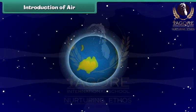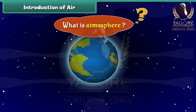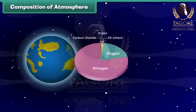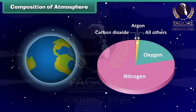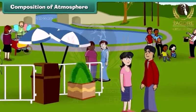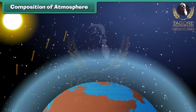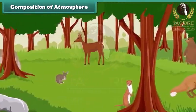Do you know the atmosphere surrounding earth is full of air? The atmosphere is made up of a mixture of gases, primarily nitrogen and oxygen, that wrap around the earth like a blanket. Without the atmosphere we would not be able to live here. It protects us from the dangerous rays coming from the sun and makes earth a perfect habitat for plants and animals.